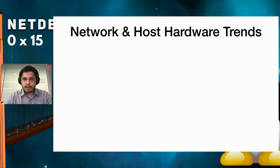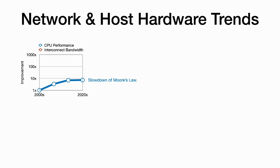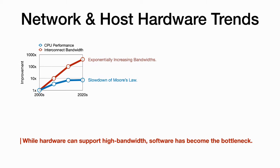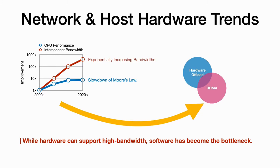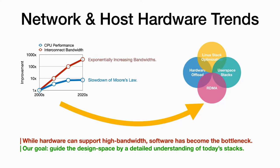Let's start by looking at network and host hardware trends that motivate our work. Over the past decade, single core performance has improved by 10x, while network bandwidths have improved by 400x. This leads us to the present day when hardware can support high bandwidth, but our network stacks have become a bottleneck. The community is exploring options like RDMA to bypass remote CPU, hardware offloads of network processing, or even entire transport protocols to FPGAs or smart NICs, optimizing the Linux network stack further, or completely bypassing it in favor of polling-based user space stacks. We feel the design space explored by these solutions will benefit from a detailed understanding of existing stacks, which is what we aim to achieve.